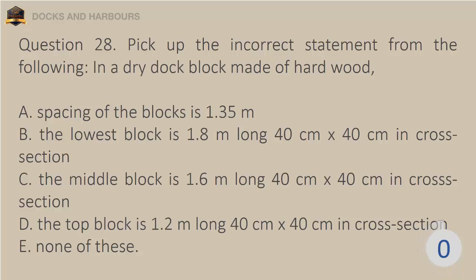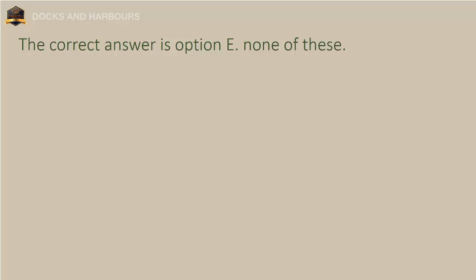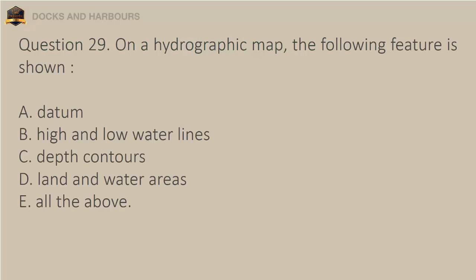Question 29. On a hydrographic map, the following features are shown: a. Datum, b. High and low water lines, c. Depth contours, d. Land and water areas, e. All the above. The correct answer is option E: All the above.